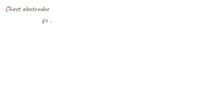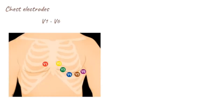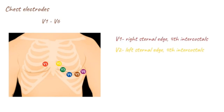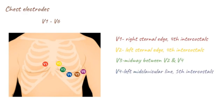The chest electrodes are named V1 to V6 and are placed as follows. V1 is placed at the right sternal edge at the fourth intercostal space. V2 is placed at the left sternal edge, fourth intercostal space. V3 is placed midway between V2 and V4. V4 is placed at the left mid-clavicular line, fifth intercostal space.